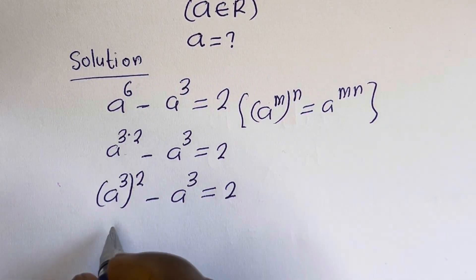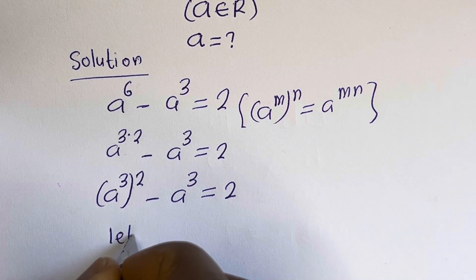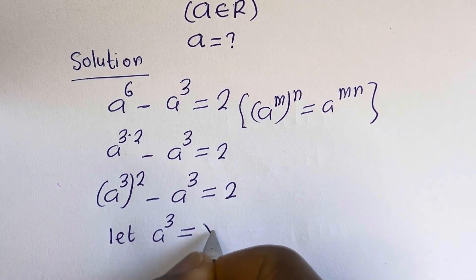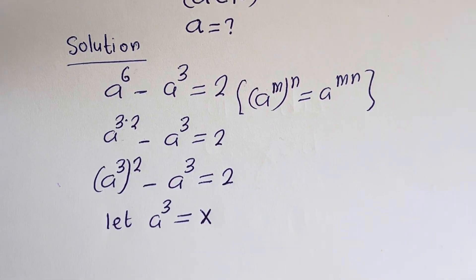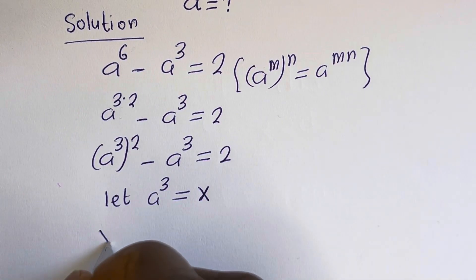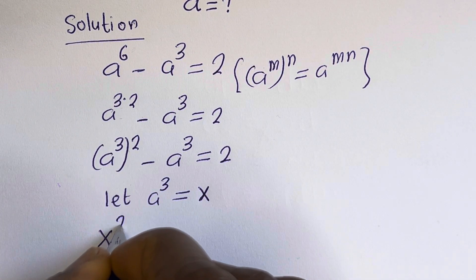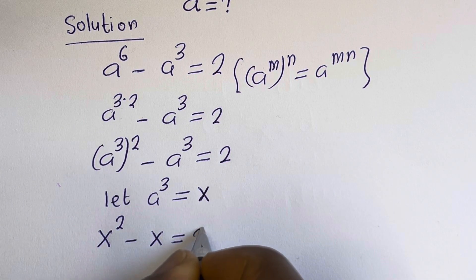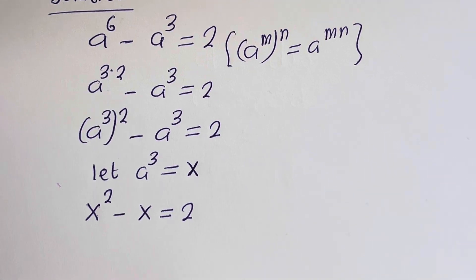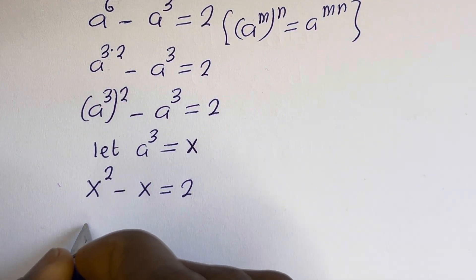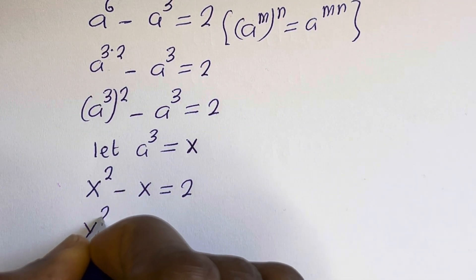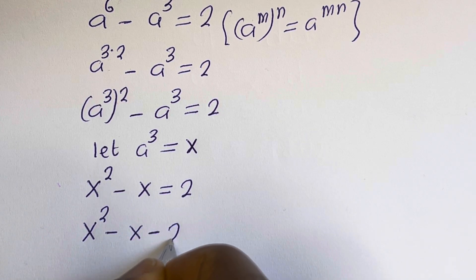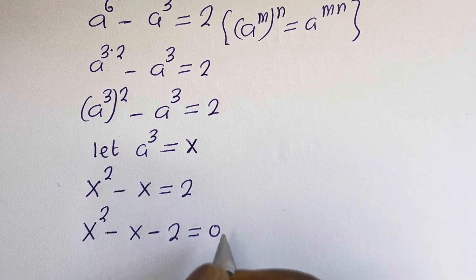Let a to the power of 3 equal x. Then this can be written as x squared minus x is equal to 2, which gives us x squared minus x minus 2 is equal to 0.